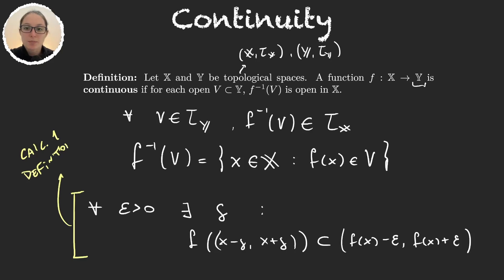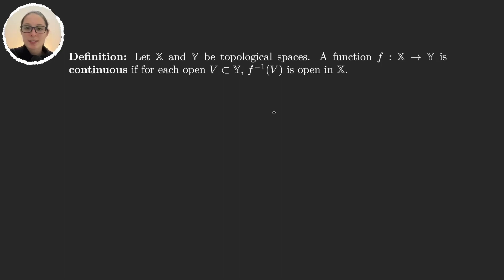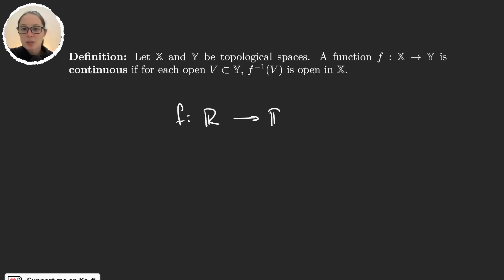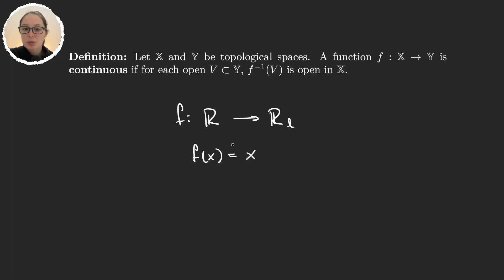As an editorial note: I realized I didn't give any examples of continuous or non-continuous functions. The first example one thinks of is the identity function — the identity function is always continuous, right? Well, this is topology, so things that are usually trivial are not always valid here. Consider f going from the real numbers with the standard topology to the real numbers with the lower limit topology, where f(x) = x, so f(3) = 3, f(4) = 4, and so on.